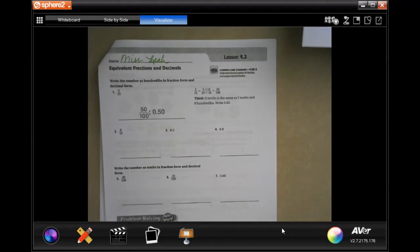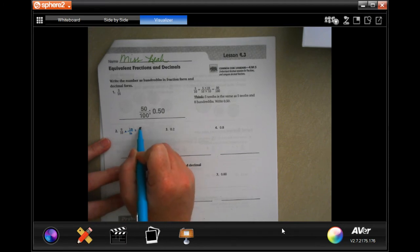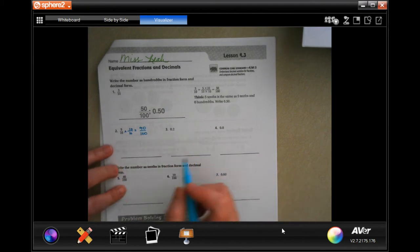Hey y'all, welcome to fourth grade chapter nine, lesson three. We're going to get started with number two. All we're doing is to get from 10 to 100, we multiply by 10. We're going to multiply the top by 10 as well, which means 90 over 100.